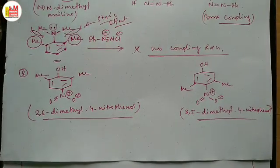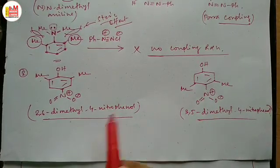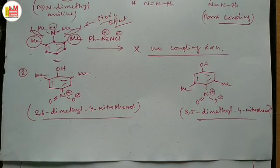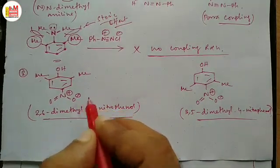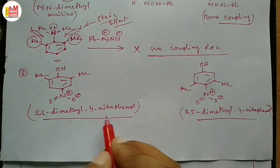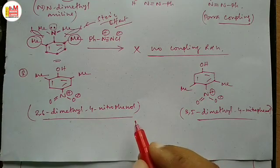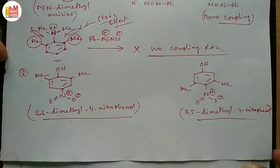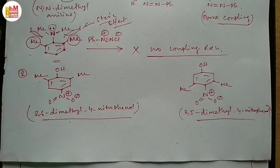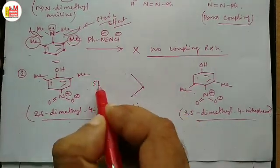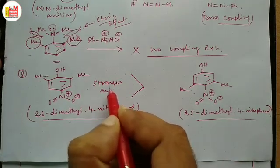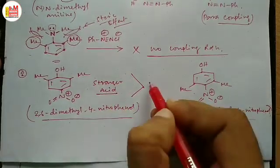If the question is: between these two, which one is the stronger acid? The answer is that 2,6-dimethyl-4-nitrophenol is a much stronger acid in comparison with 3,5-dimethyl-4-nitrophenol. So in terms of acidity, the first is the stronger acid and the second is the weaker acid.